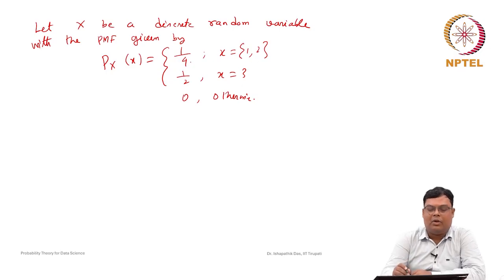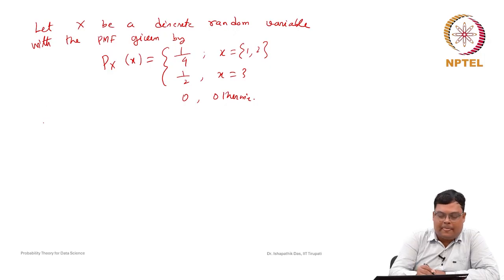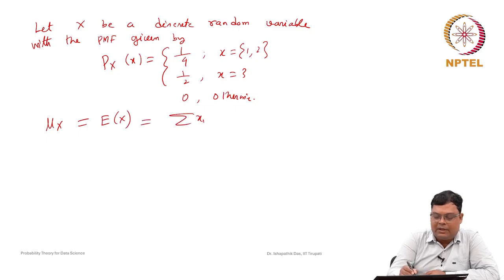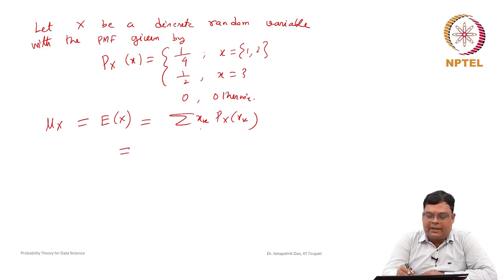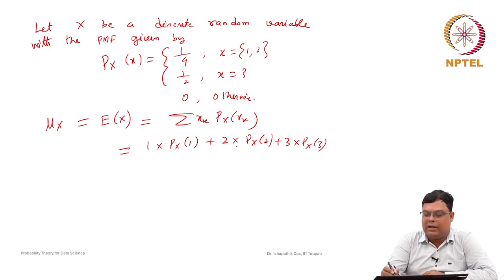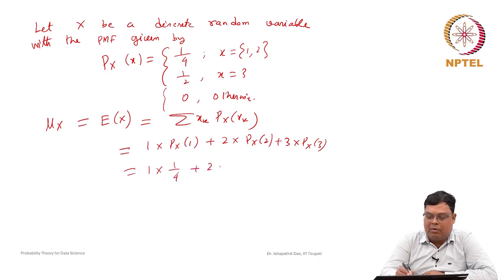To find the mean, we compute μ₁' = E[X] = Σ xₖ P(xₖ). Since X takes values 1, 2, and 3, this is: 1·P(1) + 2·P(2) + 3·P(3) = 1·(1/4) + 2·(1/4) + 3·(1/2).